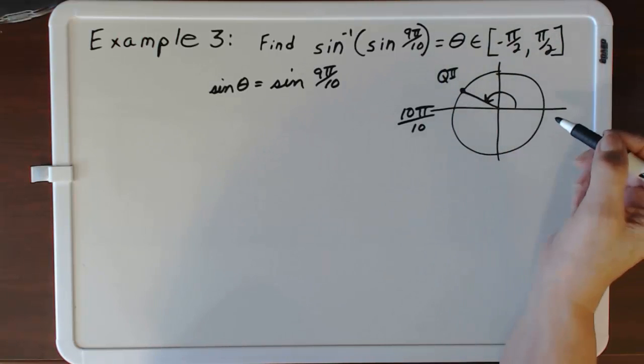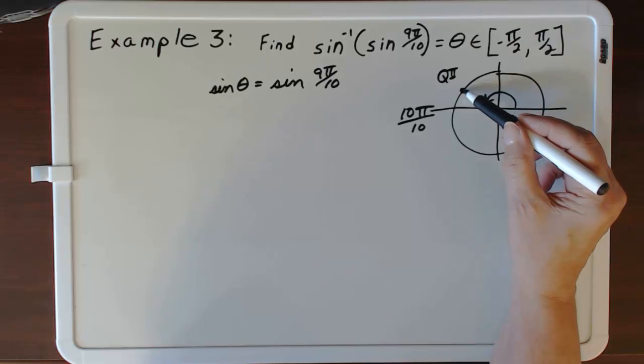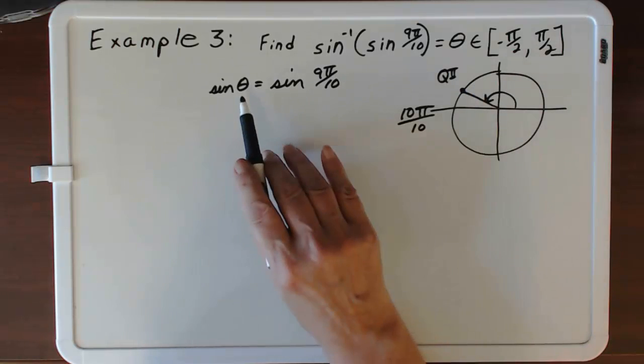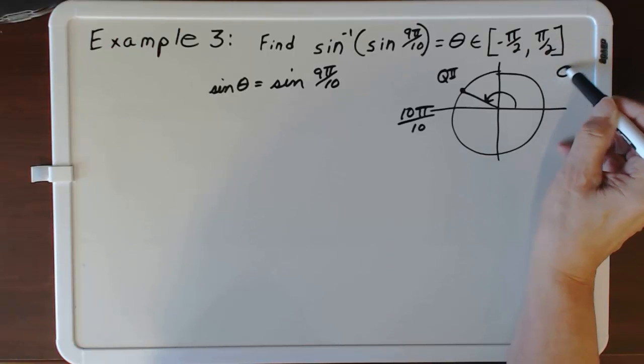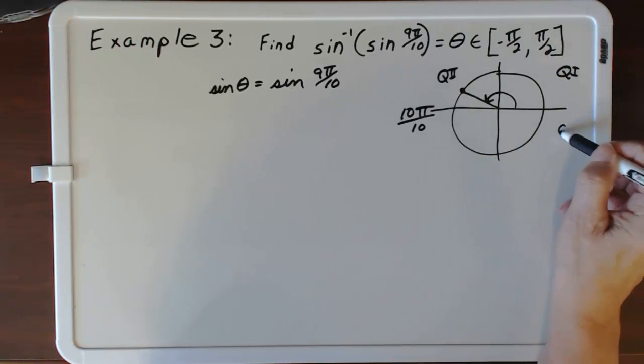This is in quadrant 2. The sine of 9π over 10 equals the sine of theta, but theta has to live in either quadrant 1 or quadrant 4.